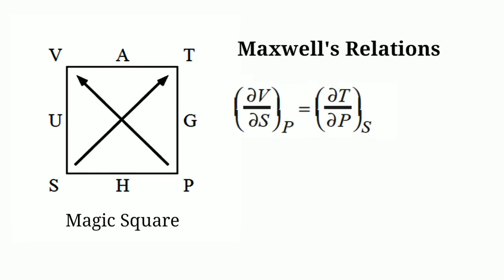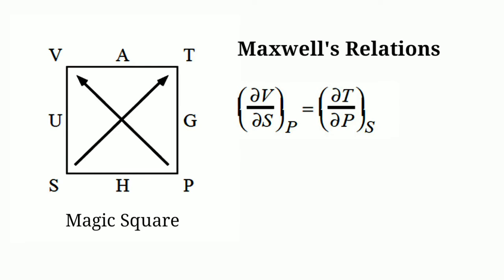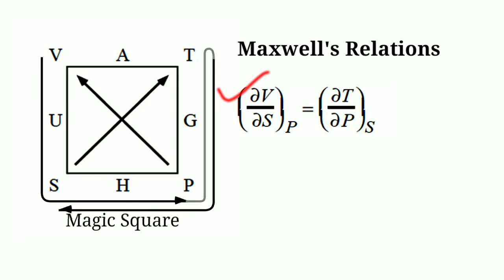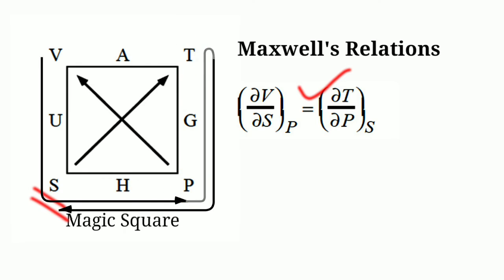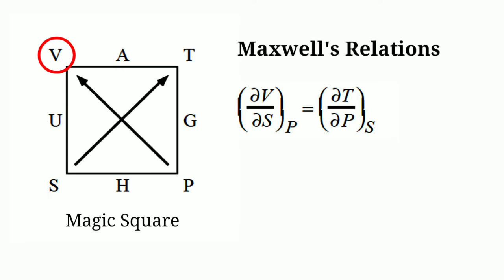To find out Maxwell's second relationship we have to move on like this: partial derivative of V with respect to S at constant P equals partial derivative of T with respect to P at constant S. Since both V and T are at the arrow head, both sides are positive.